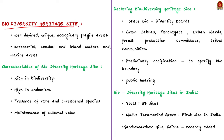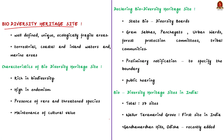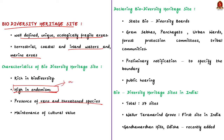Our next topic is Biodiversity Heritage Sites. Biodiversity Heritage Sites are well-defined, unique, ecologically fragile areas — terrestrial, coastal, inland water, or marine — that are rich in biodiversity. They have rare and threatened species, keystone species, and species of evolutionary significance. These sites have high endemism (plants or animals living only in a particular location) and significant cultural, ethical, or aesthetic values, making them important for maintaining cultural diversity.